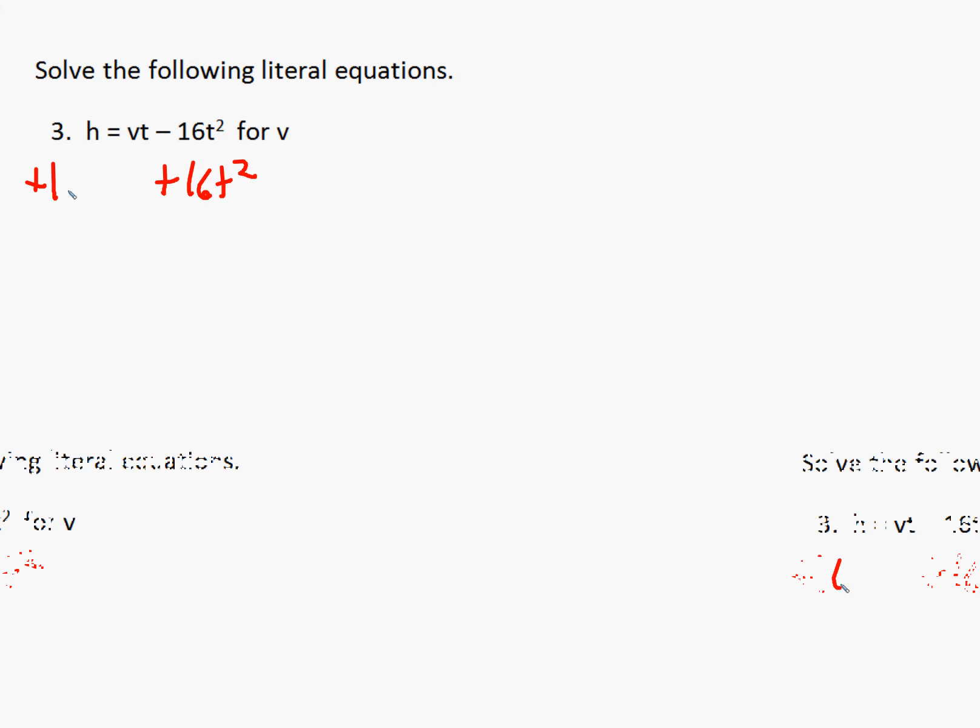Remember, we want to get rid of what's added or subtracted first, and so we have h plus 16t squared is equal to vt.